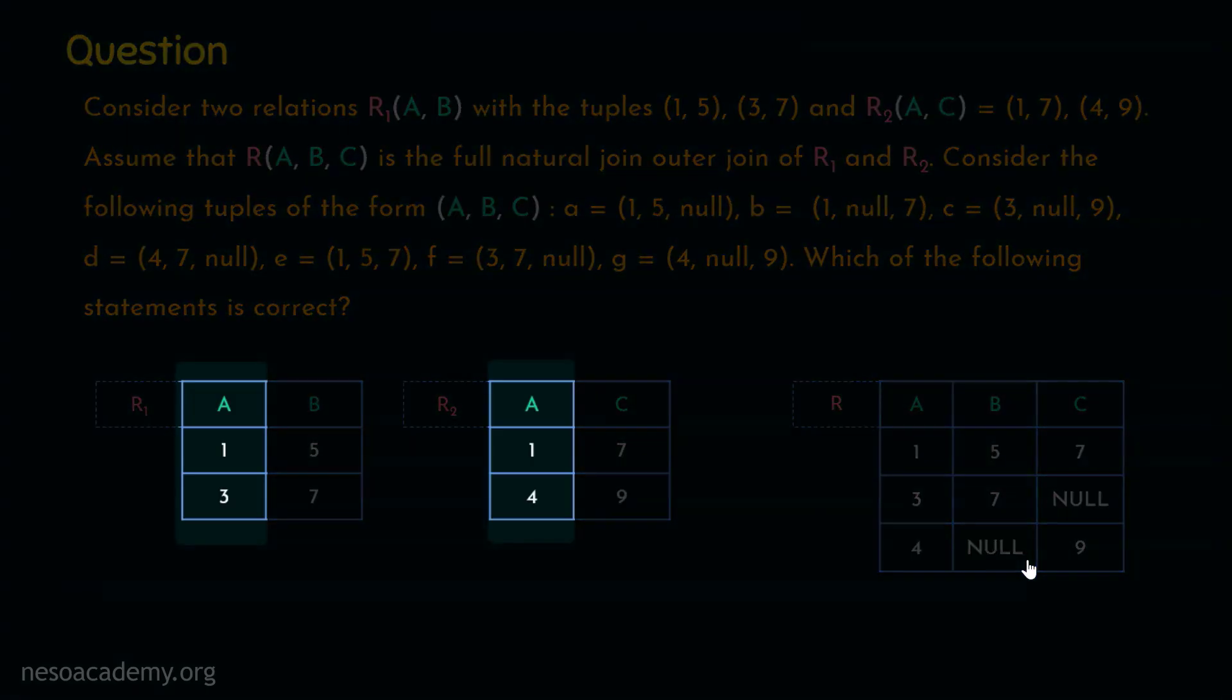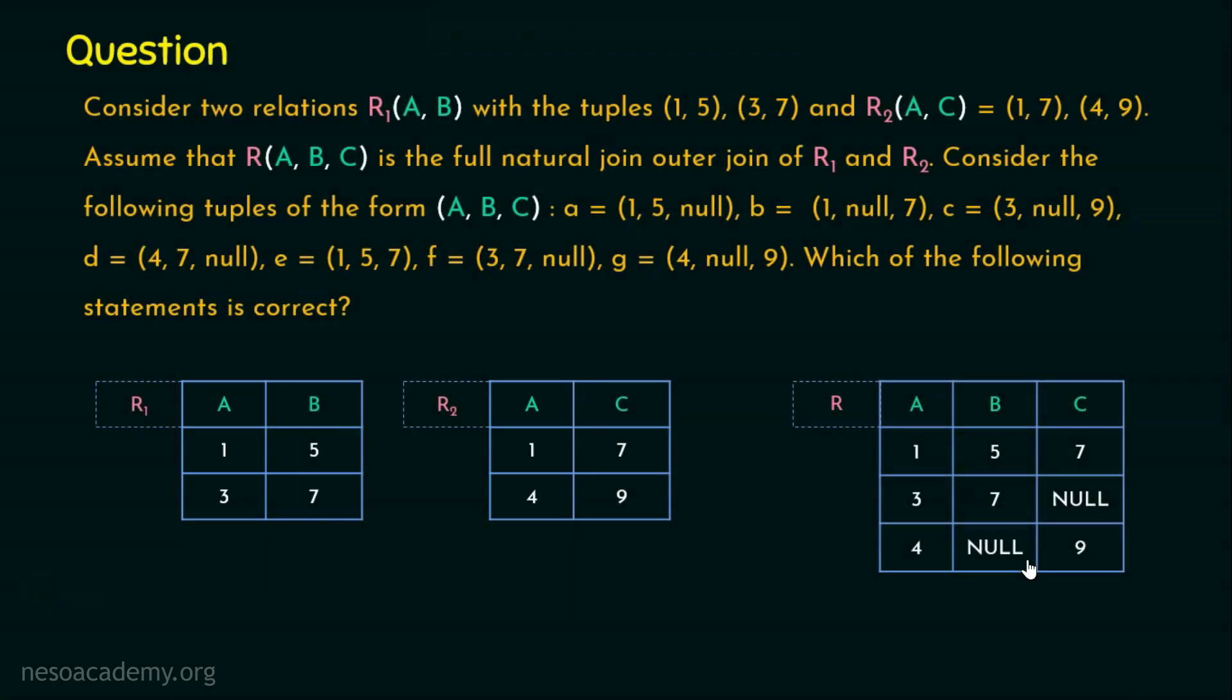But the join condition here is the natural join. What is a natural join? We should have a common attribute in both the relations. In this case, we have A as the common attribute in relation R1 as well as relation R2. So R1.A should be equal to R2.A. Using this join condition, perform full outer join.